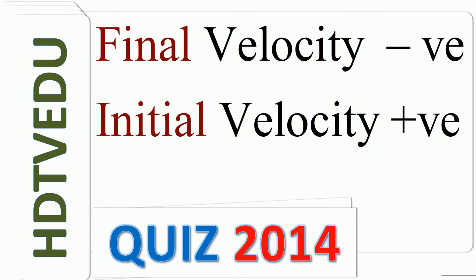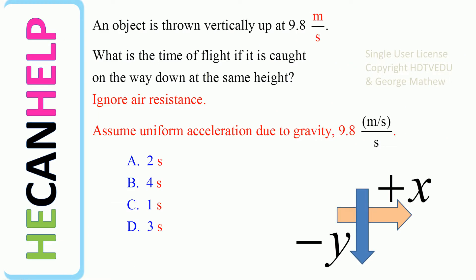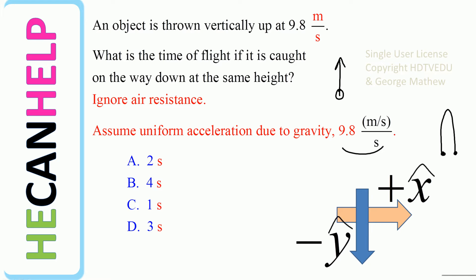Quiz 2014. An object is thrown vertically up at 9.8 meters per second. What is the time of flight if it is caught on the way down at the same height? Positive axis is defined as to the right, negative y is vertically down. The object goes up and comes back down to the same point. Ignore air resistance. Assume uniform acceleration due to gravity, 9.8 meters per second per second, and that is the magnitude. Positive x is defined as to the right, negative y is defined as vertically down.